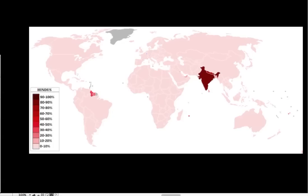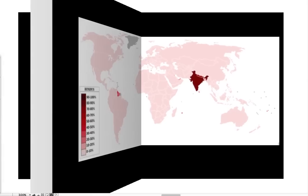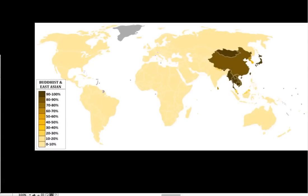Then we're going to jump over just a little bit and take a look at Buddhism — with its origins in India, the Four Noble Truths, the Eightfold Path, and the denial of Hinduism. We're also going to examine the spread and the appeal of Buddhism.